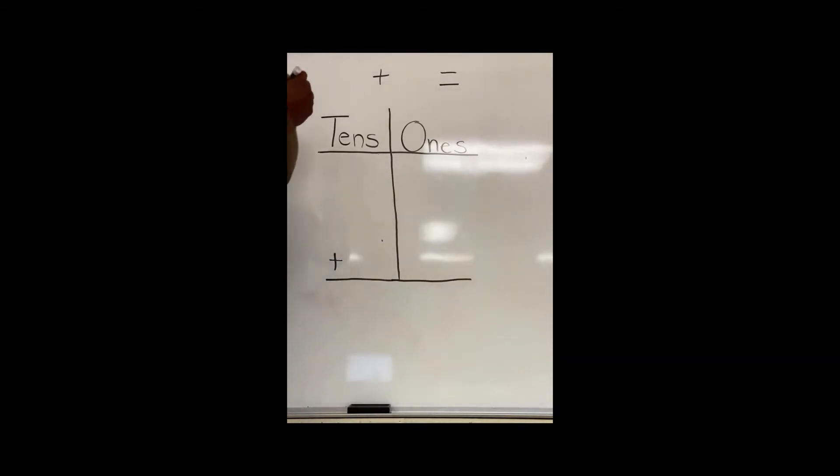This time we'll add 47 plus 16. Once again, I need to make sure that I put my tens place in the tens place and my ones place in the ones place. I have four tens and seven ones. I have one ten and six ones.